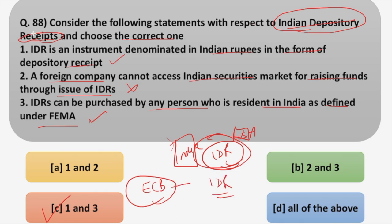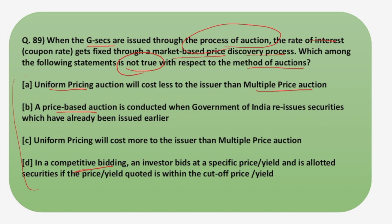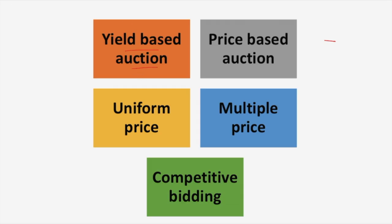Moving on to the next question. When government securities are issued through auction, the coupon rate gets fixed through a market-based price discovery process. The question asks which statement is not true with respect to auction methods. Key terms to understand are: uniform pricing, multiple price auction, price-based auction, and competitive bidding.